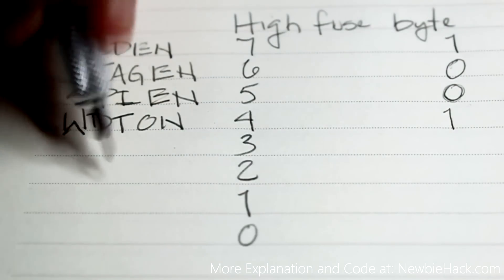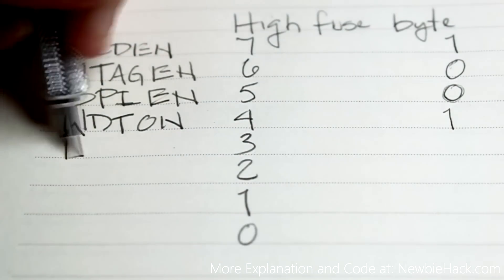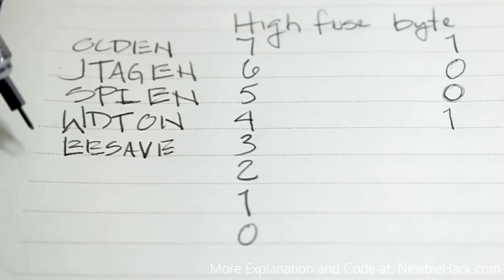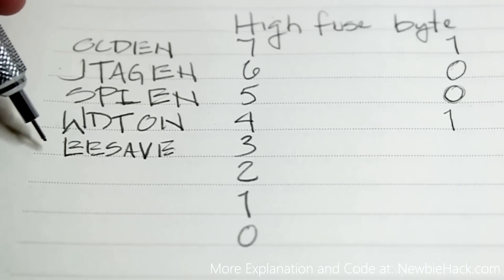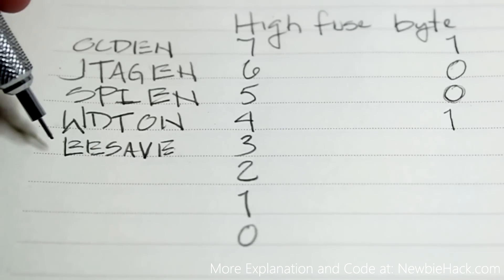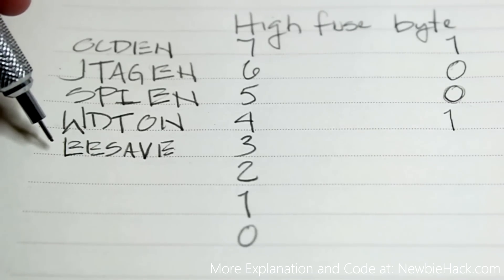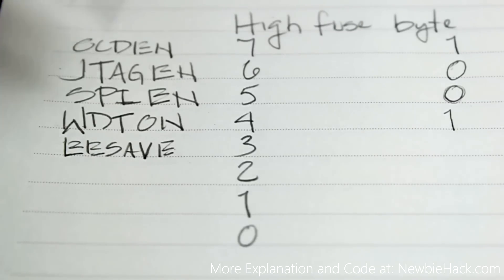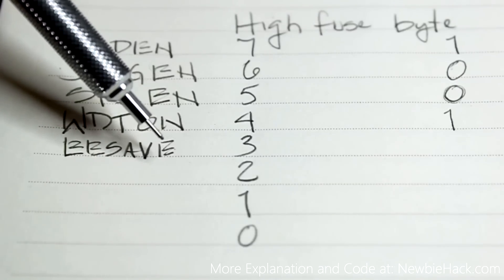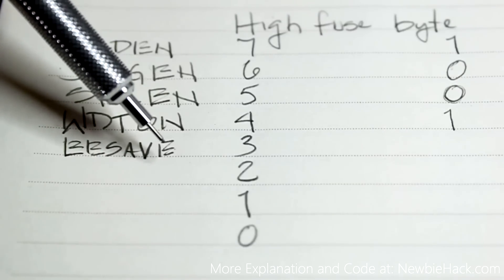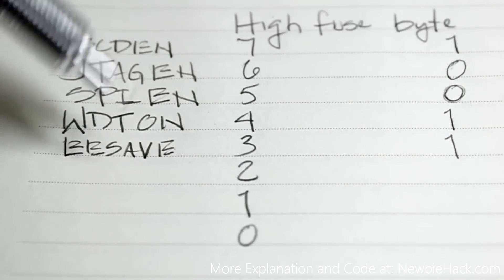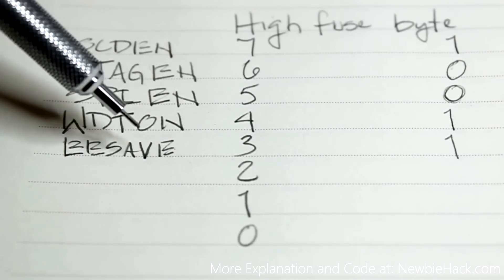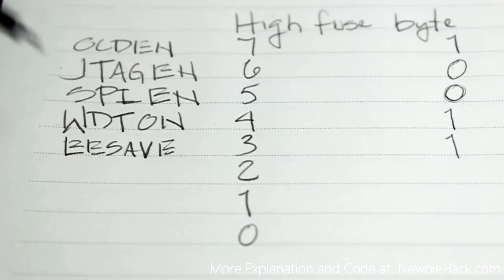The next fuse bit is EESAVE. EESAVE is related to the EEPROM — electrically erasable programmable read-only memory. An EEPROM is a section of memory we can use to store data. This particular bit, which is set as unprogrammed, will allow you to save the EEPROM on chip erase if it is programmed.